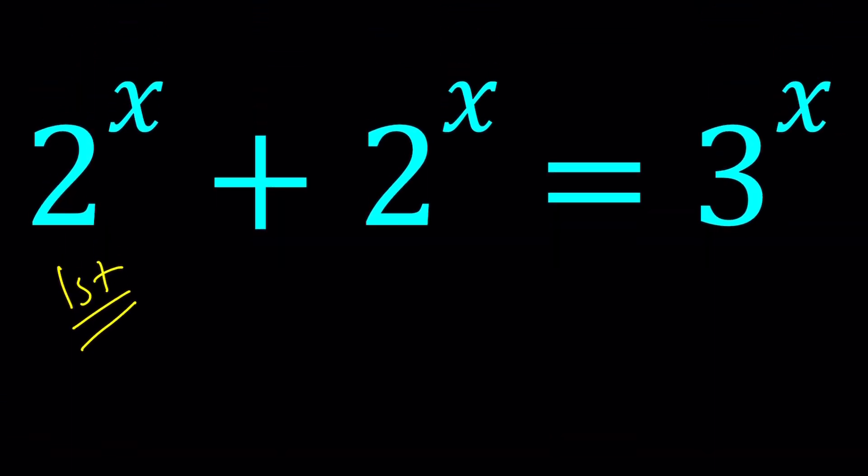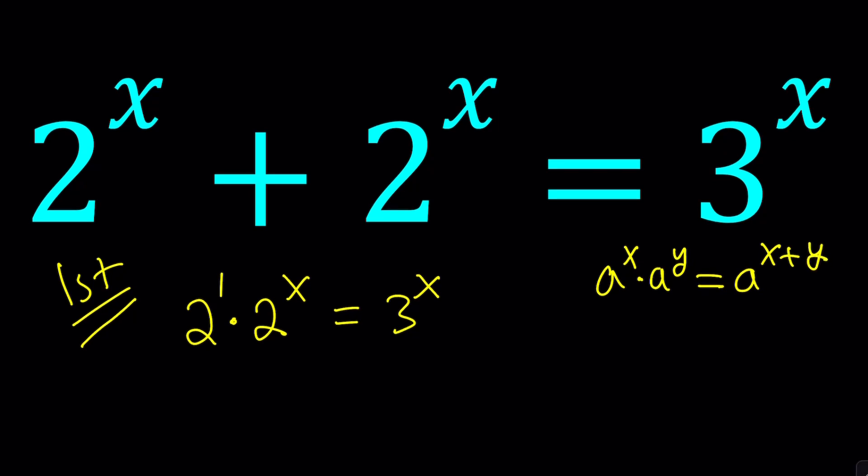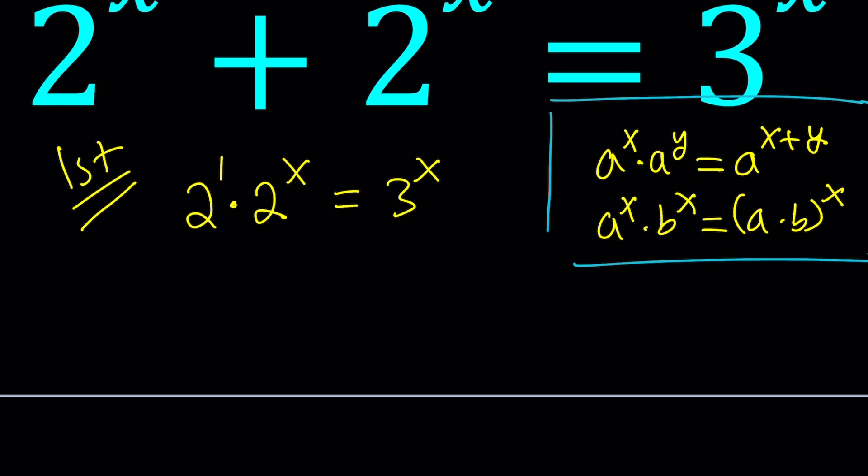So for my first solution, I'm going to write the 2^x + 2^x as 2 times 2^x = 3^x. And then since this is 2 to the first power, I can go ahead and add the exponents. Remember the rule, if you multiply two powers, you add the exponents. But of course, they have to have the same base.